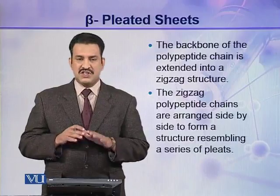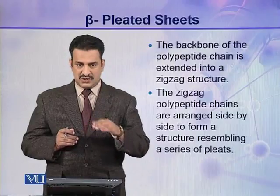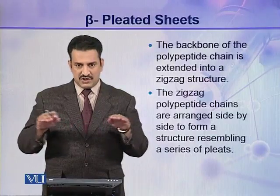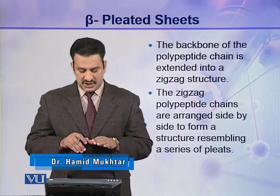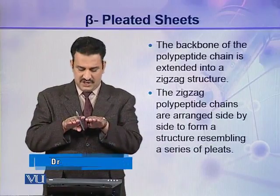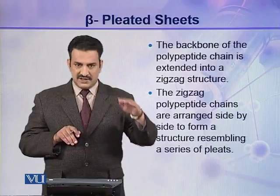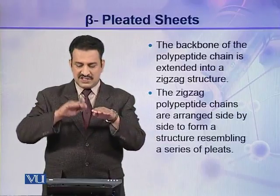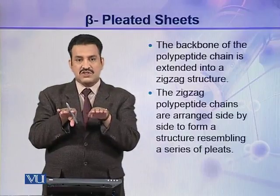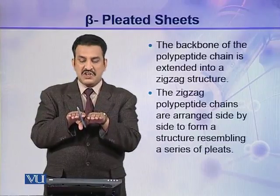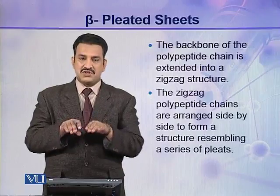In beta sheets, the backbone of the polypeptide chain is extended into a zigzag structure. The zigzag polypeptide chains are then arranged side by side. When they are arranged side by side they resemble a pleated sheet, which is why these structures are called beta pleated sheets.